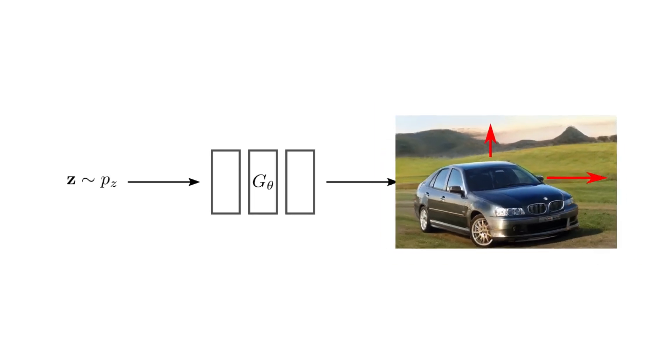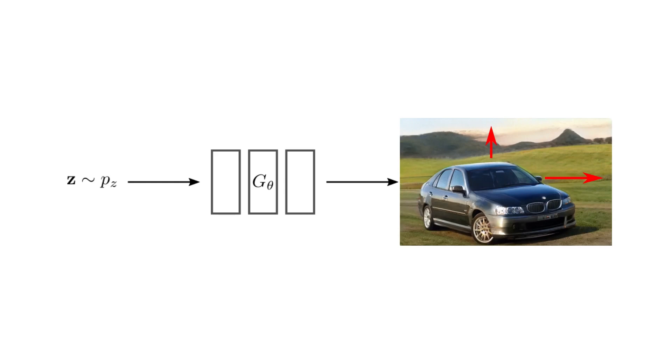However, how can you take the same car you just generated and move it, say, to the top or to the right of the image? This remains a big challenge for 2D-based GANs.